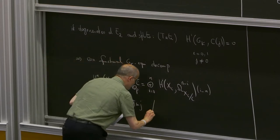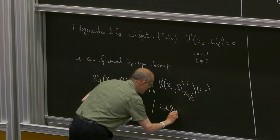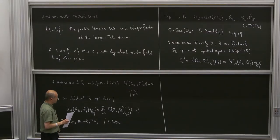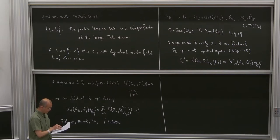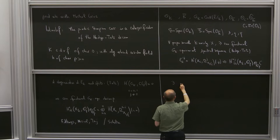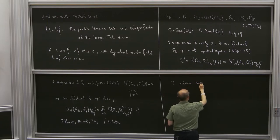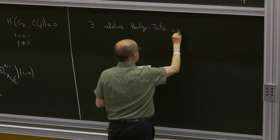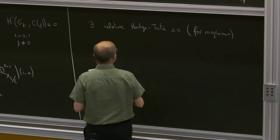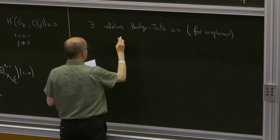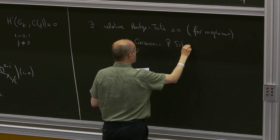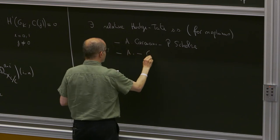It was extended later to rigid analytic varieties by Scholze. In fact, it was Scholze who first observed the statement in terms of the Hodge-Tate spectral sequence, though it's implicit in the work of Faltings. I would also like to mention that there exists a relative version of this Hodge-Tate spectral sequence, by which I mean for morphisms. There have been two independent proofs: one by Caraiani and Scholze, and another one by Michel Gros and myself.